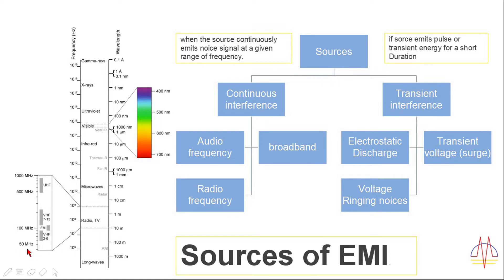All these are kinds of EMI generation sources. The bandwidth of radiation shown on the scale is from 50 MHz to 1000 MHz. This spectrum contains different kinds of signals, including TV, radio, and mobile signals. Depending upon the application, the transmission bandwidth and frequency changes.